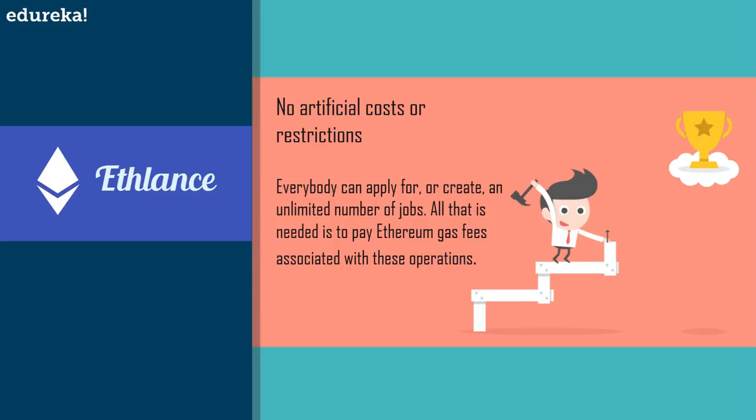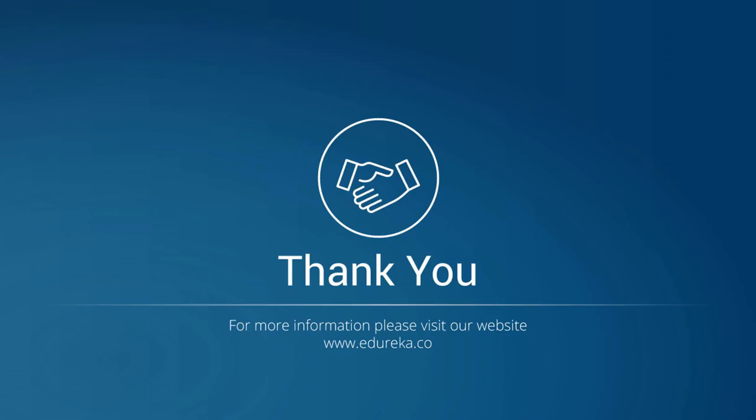In the end we saw how decentralized applications are developed, the technology stack that is used — basically HTML, CSS, Web3 API, and Solidity — and how decentralized applications compare to traditional applications. We also saw a few very good examples. In the upcoming videos I'll be teaching you guys how to create your very own simple decentralized application by interacting with the Web3 API. So please hold on — that's going to be all for now. Goodbye and have a good day.